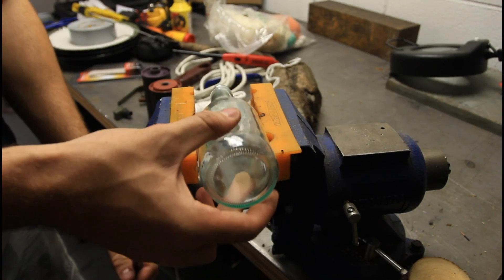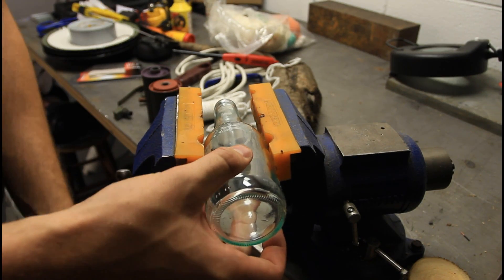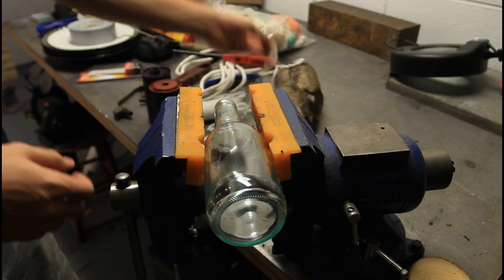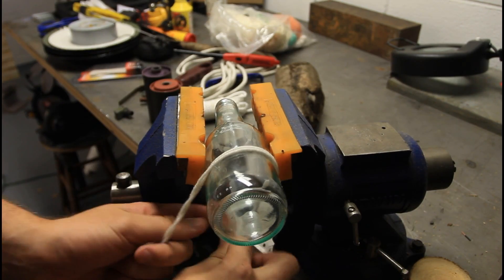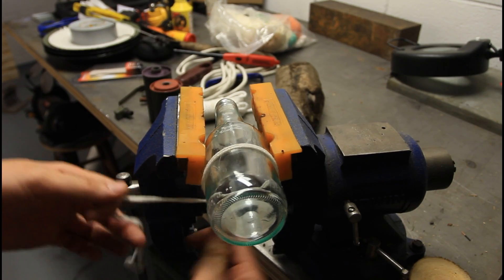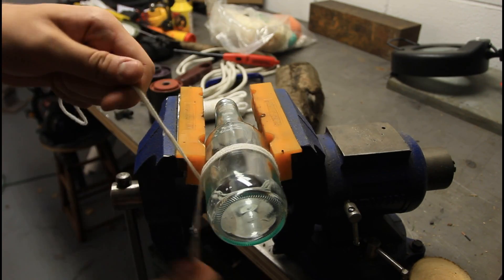Alright, let's get to it. So I'm going to put the bottle in the vise like that just because I don't have an extra person to hold the bottle for me, and then I'm going to wrap this around where I want to cut it.